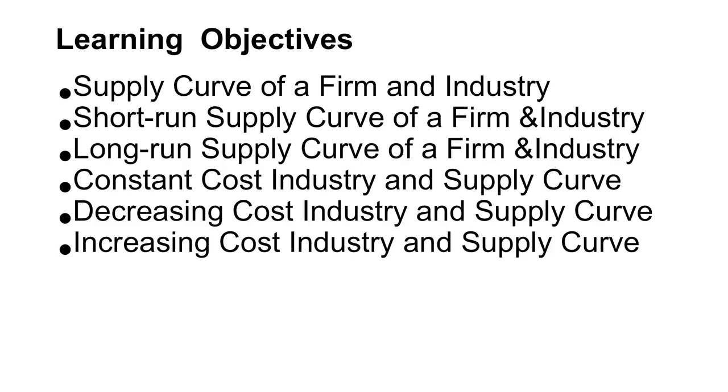We discussed about the firm and industry equilibrium in the short run and long run, the various conditions for equilibrium, and the difference between the firm and industry. Today we are going to discuss the industry's long-run supply curve separately. In this session we will cover: supply curve of a firm and industry, short-run supply curve of firm and industry, long-run supply curve of firm and industry.